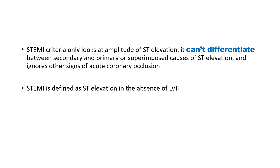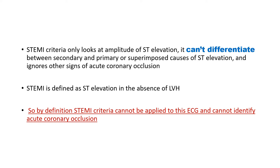The STEMI criteria only looks at the amplitude of ST elevation — it cannot differentiate between secondary and primary causes of ST elevation, and it ignores other signs of acute coronary occlusion. STEMI in the true sense should be defined as ST elevation in the absence of any other pathology like left ventricular hypertrophy. By definition, STEMI criteria cannot be applied to this ECG and cannot identify acute coronary occlusion. So what do we do next?